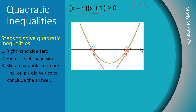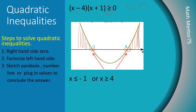Looking at the other portions of the curve: when the values of x are less than -1, the curve is positive; and when the values of x are greater than 4, the curve is also positive. Since we want to find where the quadratic inequality is positive, our answer is x ≤ -1 or x ≥ 4 — these are the two regions in which the quadratic inequality is positive.